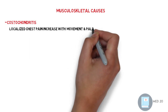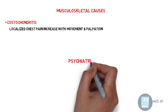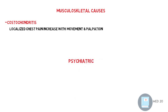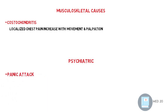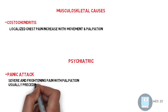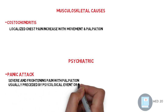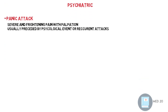And finally, psychiatric — panic attack. Psychiatric illness should not be in the differential unless all of the physical differential diagnoses have been excluded, even if the patient has had a psychiatric or panic attack before. Physical illness should be excluded before psychiatric disease is diagnosed. Panic attack comes with severe, frightening pain with palpitations, usually preceded by psychological events or recurrent panic attacks.